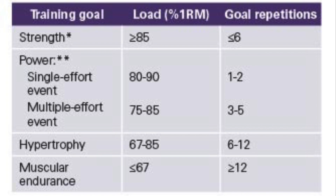Power exercises are a different story. For the snatch, clean, and clean and jerk, at 80–90% of one-rep max we should be performing one to two reps, and at 75–85% the athlete can perform three to five reps. These are highly complex movements and should not be performed for high reps, as fatigue would hinder form — that's why these lifts are done first. A fatigued athlete attempting a snatch could drop the bar on their head, which is not a good thing.